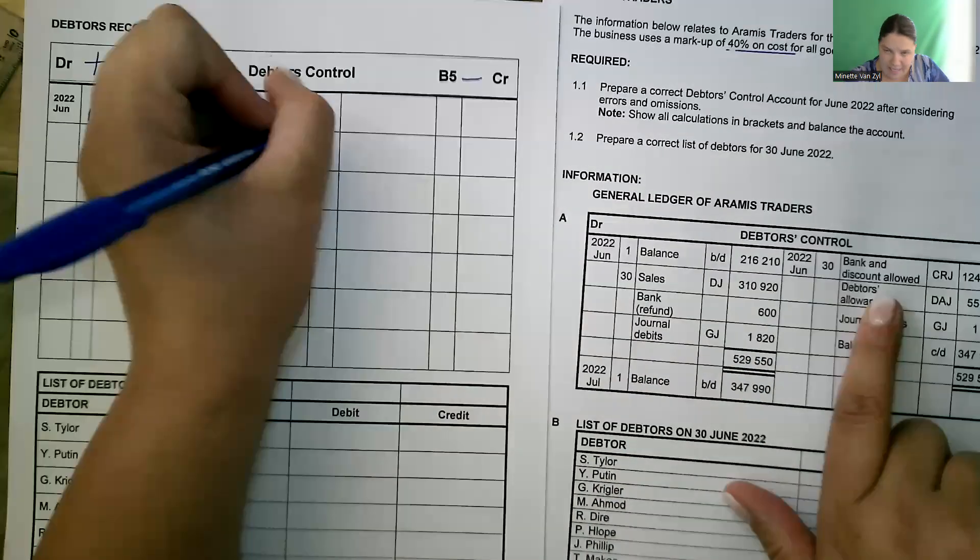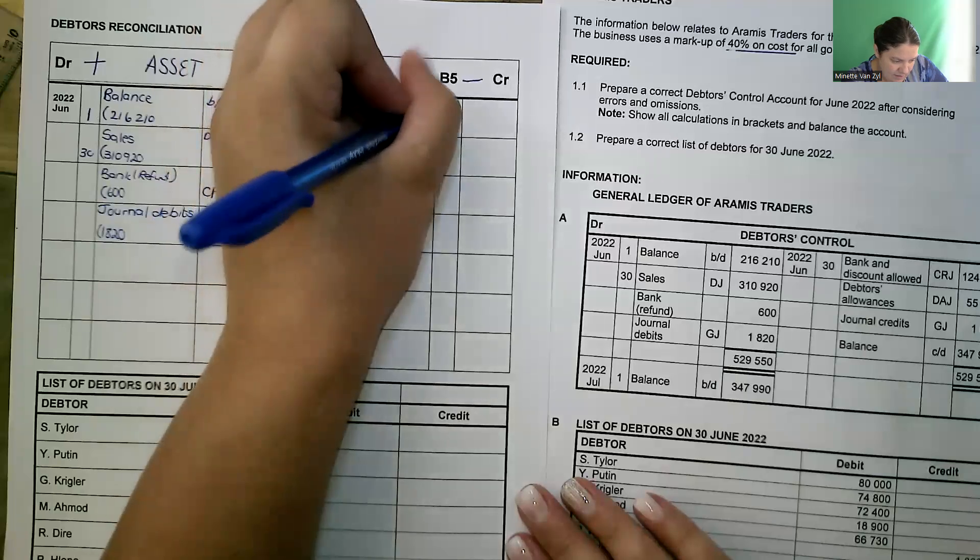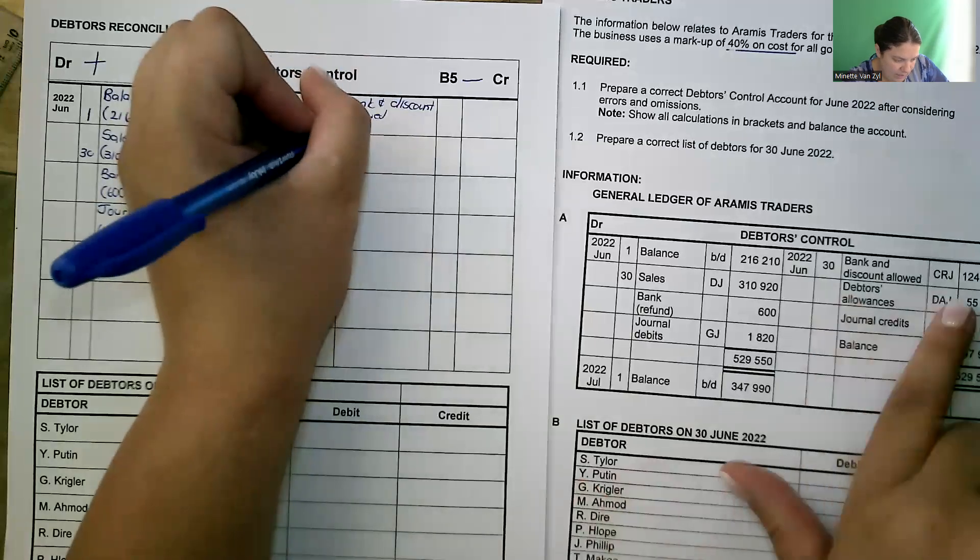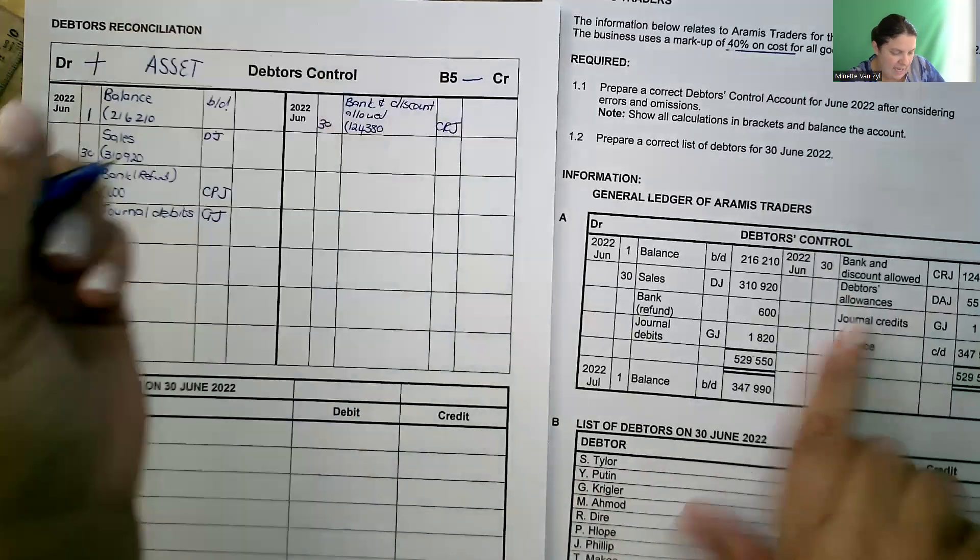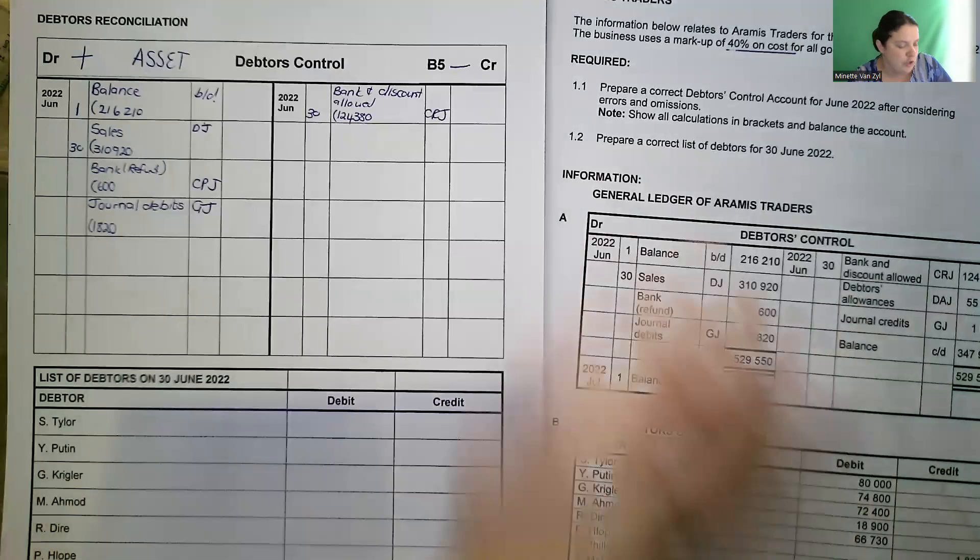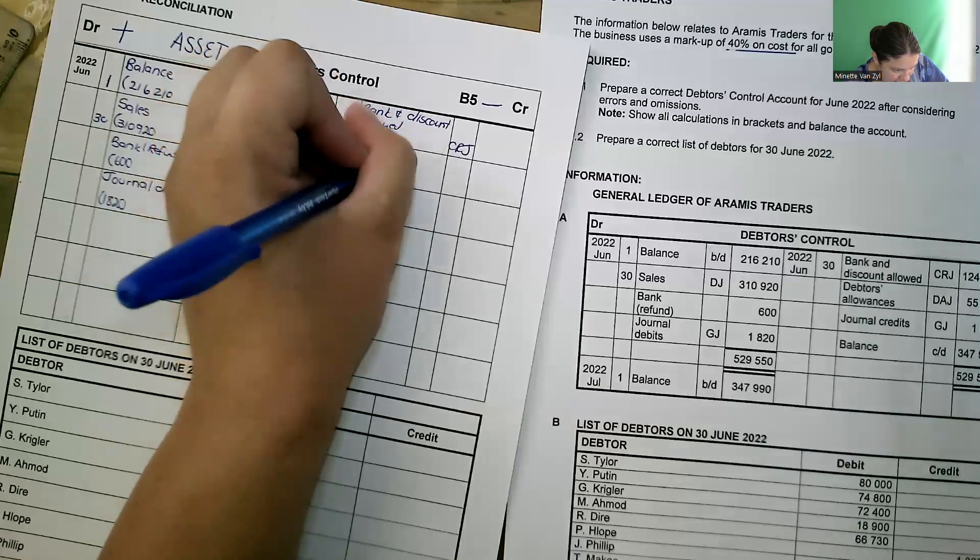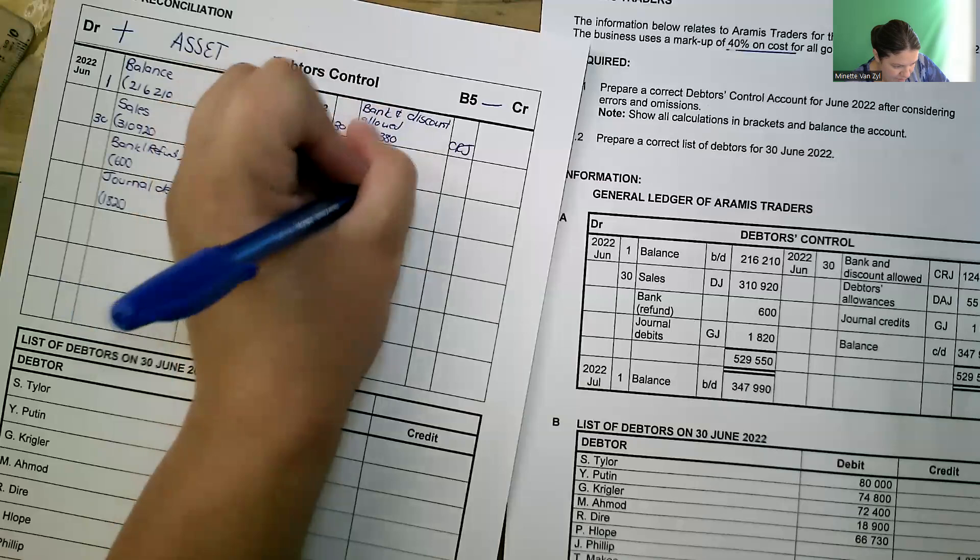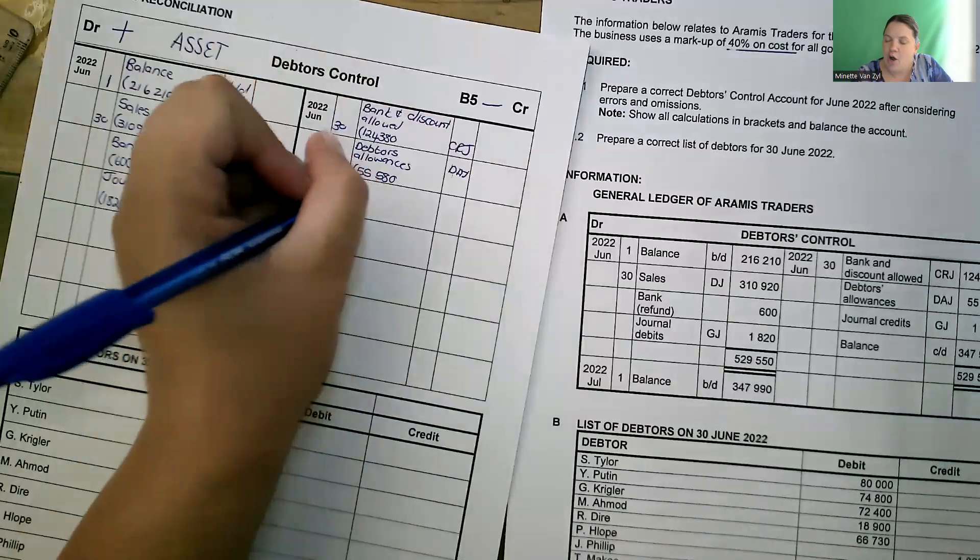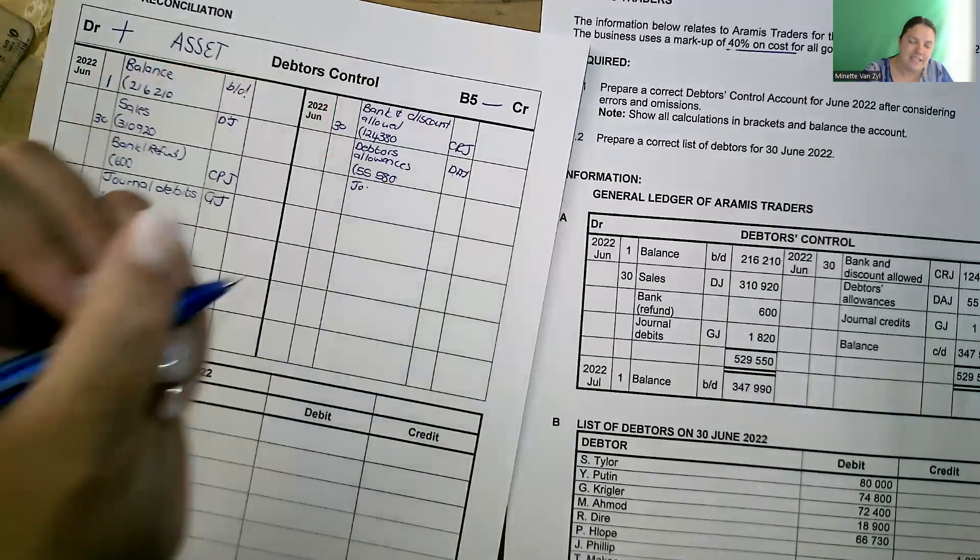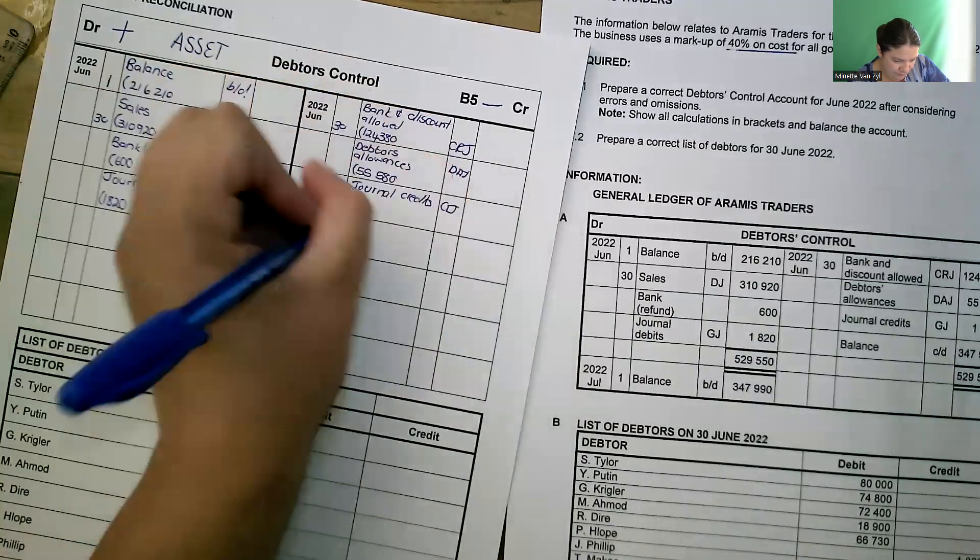On the credit side. If a debtor pays us. Day 30, bank and discount allowed. Open a bracket. 124,380 from the CRJ. Then we have debtors allowances. So this is in the event a debtor returns goods that they've previously purchased. Debtors allowances. 55,580 from the DAJ. Then we have journal credits. If we are correcting errors, or transferring to a creditors account. Journal credits, general journal. 1,600.